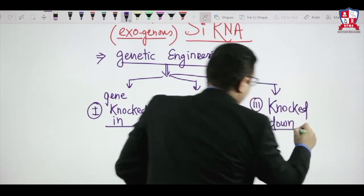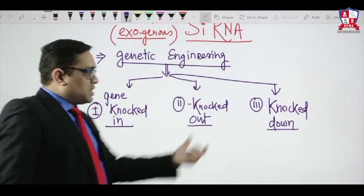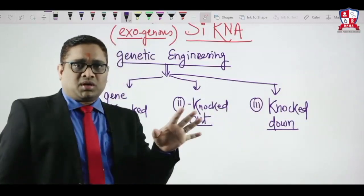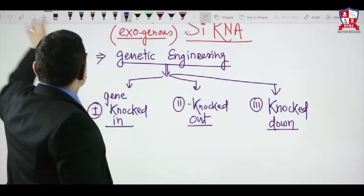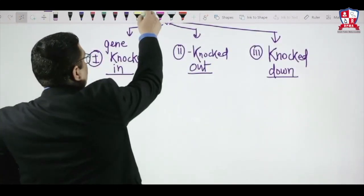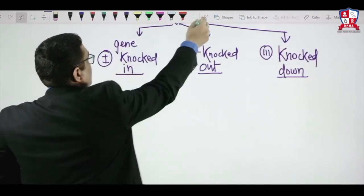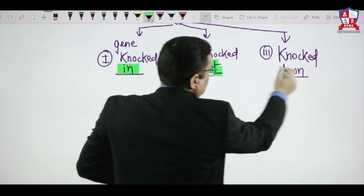These are the three important things we have to keep in mind: Gene Knocked In, Gene Knocked Out, Gene Knocked Down. What is the meaning of these three things? First, we have to understand. It is very simple. Look at the name—the name itself is giving a brief description: in, out, down.